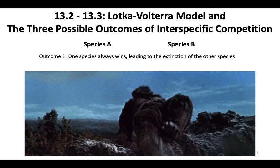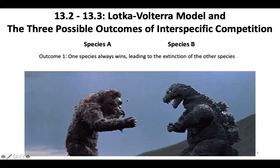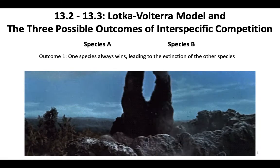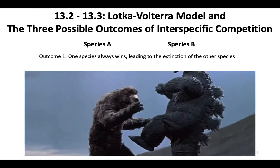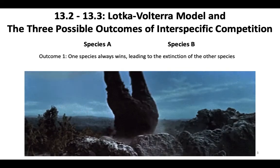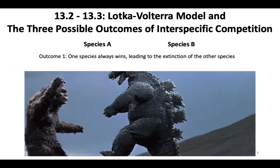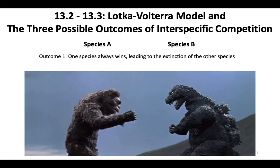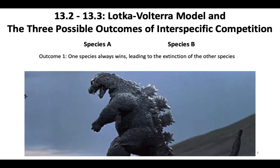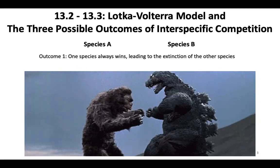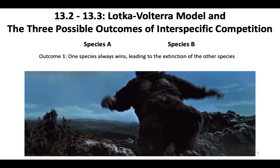Outcome one — also outcome two in the book — is when one species always wins, leading to the extinction of the other species. Two species are competing in an environment and one takes resources from the other so severely that it leads to their extinction in that specific environment. Whether species A eliminates species B or vice versa, it's essentially the same outcome.